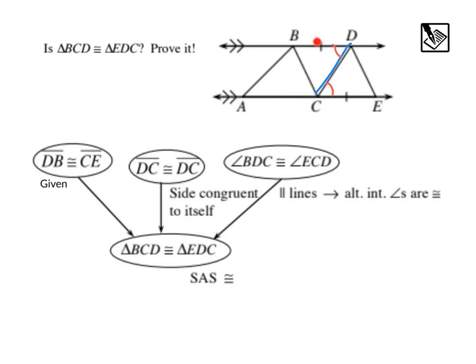Lastly, we've got side, angle, side. And we know that that is one of our congruence relationships, so we can finish our proof off. Triangle BCD is congruent to triangle EDC by reason of side-angle-side congruence. Okay.